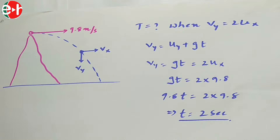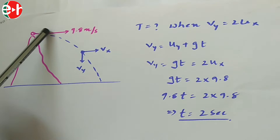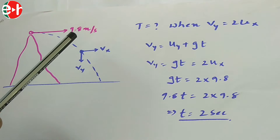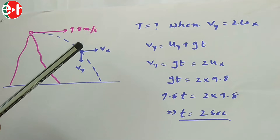A body is projected horizontally from the top of a hill with a velocity of 9.8 m/s. The question is: what is the time elapsed before the vertical component of velocity is twice the horizontal component of velocity?